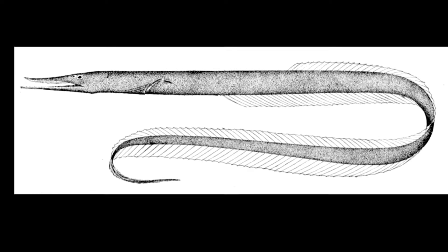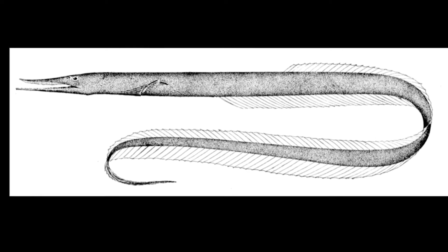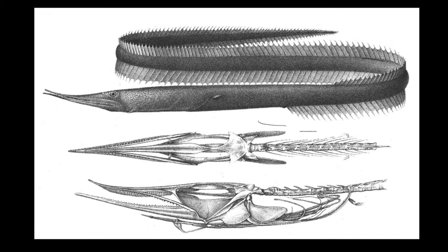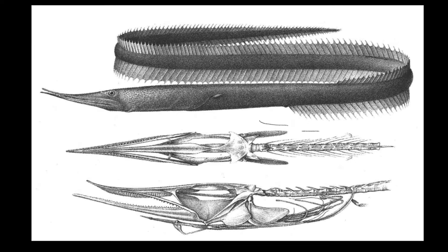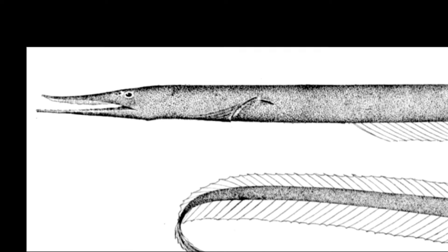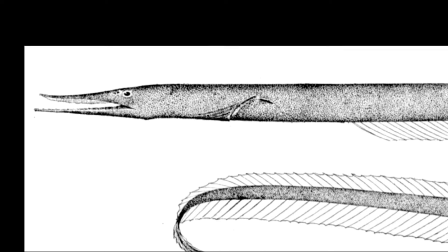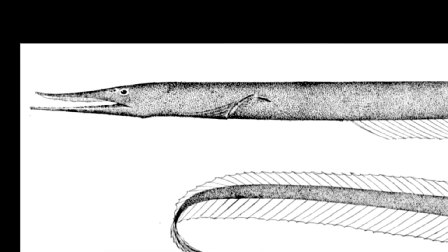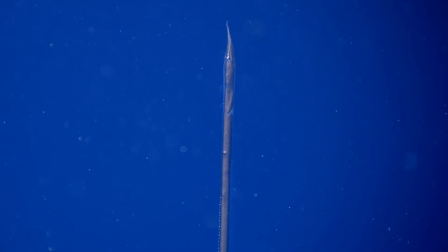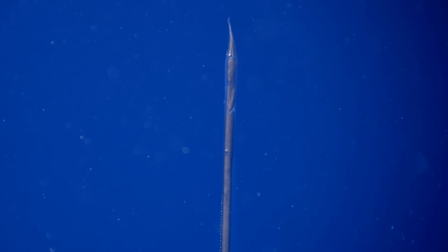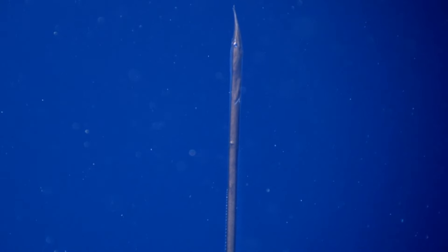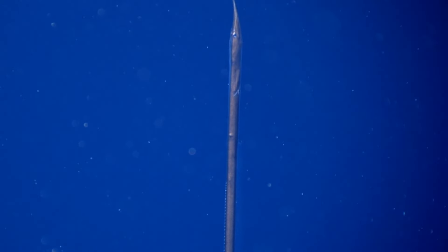Larvae and juveniles are found near the surface. Sawtooth eels have a slender tail and long and pointed jaws. Their lower jaw usually projects beyond the upper jaw. They have no scales. They are dark brown or black in color with an iridescent silvery or bronze epidermal layer.